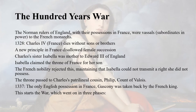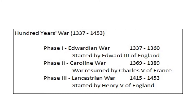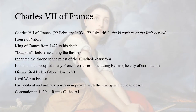In 1337, the only English possession in France, Gascony, was taken back by the French king. This started the Hundred Years War, which went on in three phases. For our study, let us focus on the third phase, known as the Lancastrian War, which lasted from 1415 to 1453. It was started by King Henry the Fifth of England, during the time of Charles the Seventh of France.